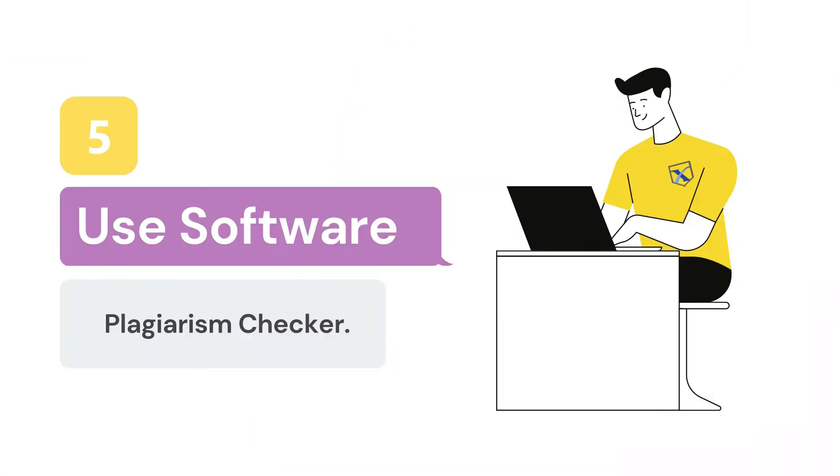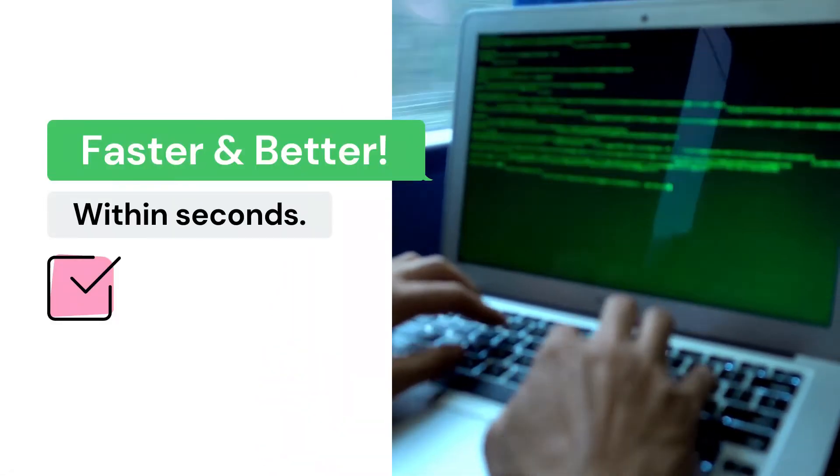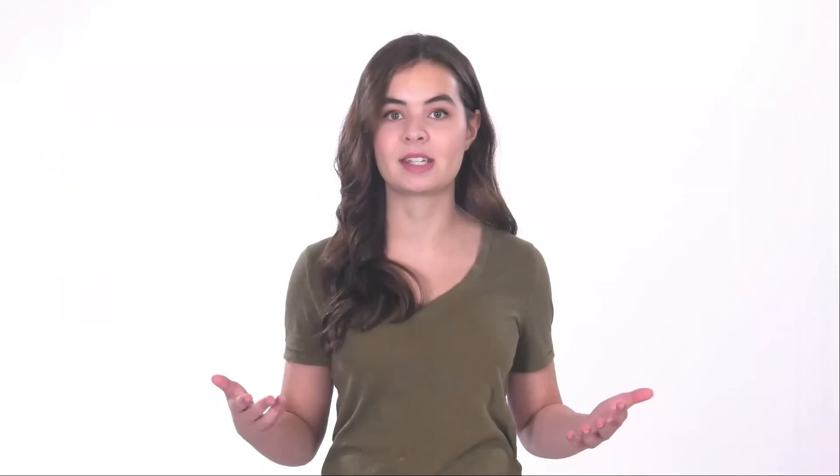Fifth, use plagiarism checking software. One of the most efficient tools for teachers to reduce plagiarism is through using plagiarism checking software. It'll be a life and time saver, since it cuts out the manual effort of typing text into a search engine to see if it was copied, or comparing it with other papers. You can scan material for online plagiarism against billions of webpages, or check it against other papers in class through a bulk comparison.